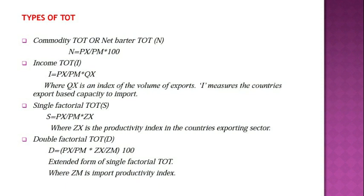The next type is Income TOT, represented by i. The formula is: i = (PX / PM) × Qx, where PX is the price of exports, PM is the price of imports, and Qx is the index of the volume of exports. Income TOT measures the country's capacity to import based on its export earnings.